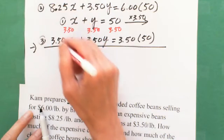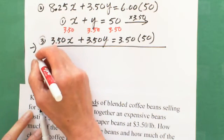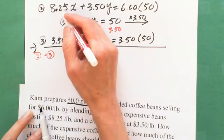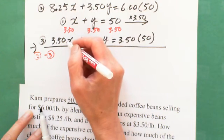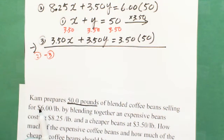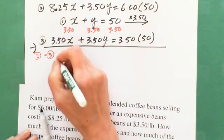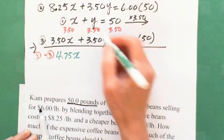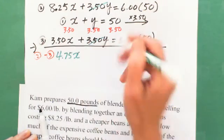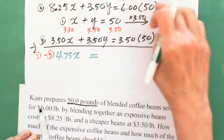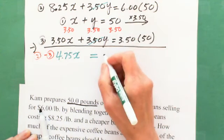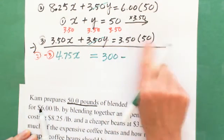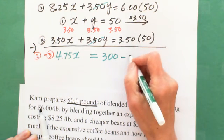And I do subtraction. So this one subtract this one. So I write down equation 2 minus equation 3. I got this one minus this one. So 8.25X subtract 3.50X, we got 4.75X. And this is 3.50Y, the 3.50Y cancel when they subtract cancel. Then you got the equal, this side is 6 times 50 is 300, right? 300 minus this one, the 3.50 times 50 is 175.